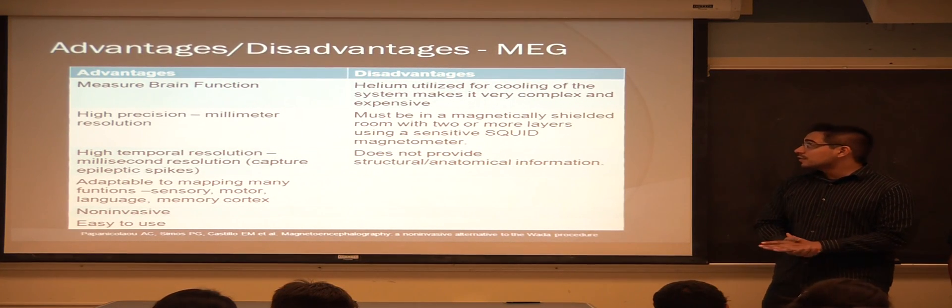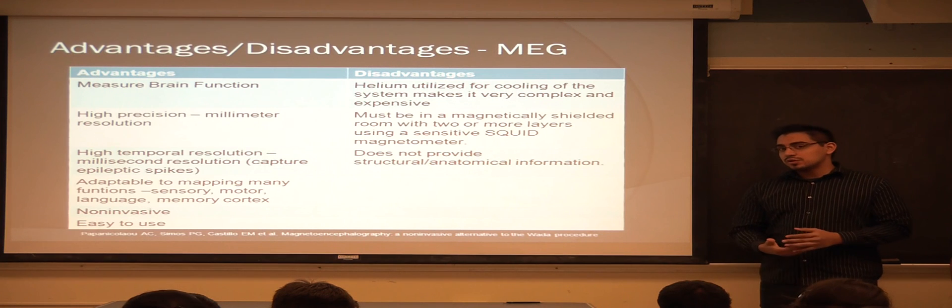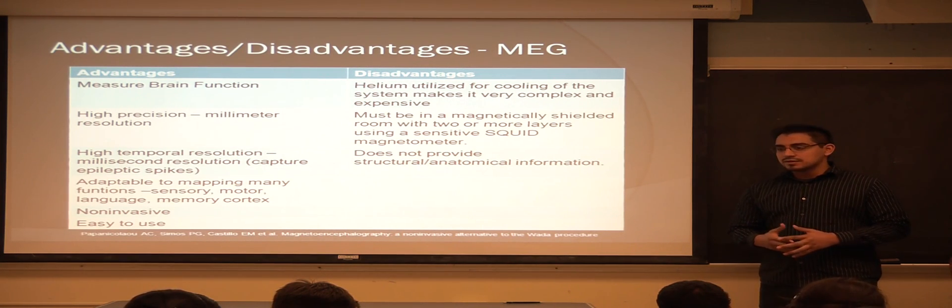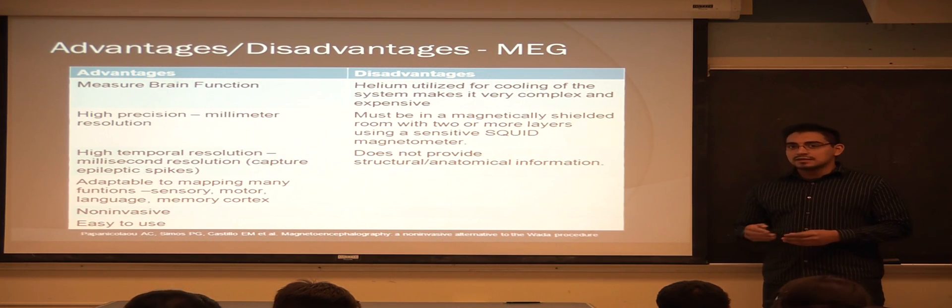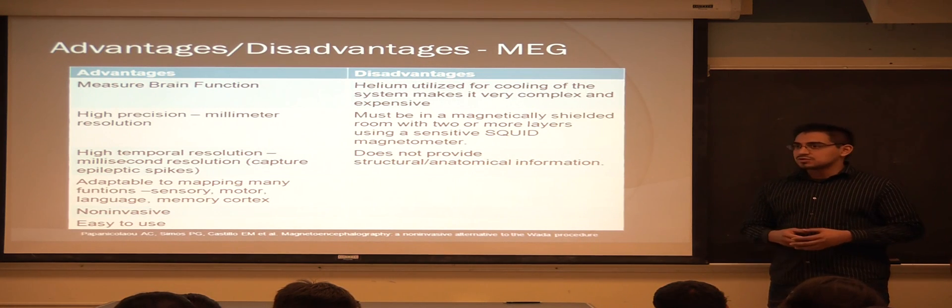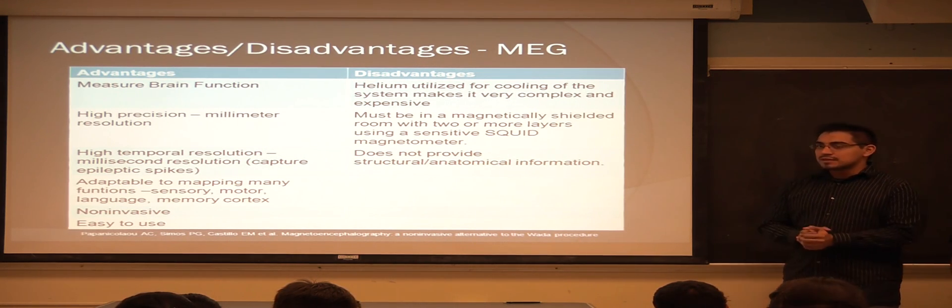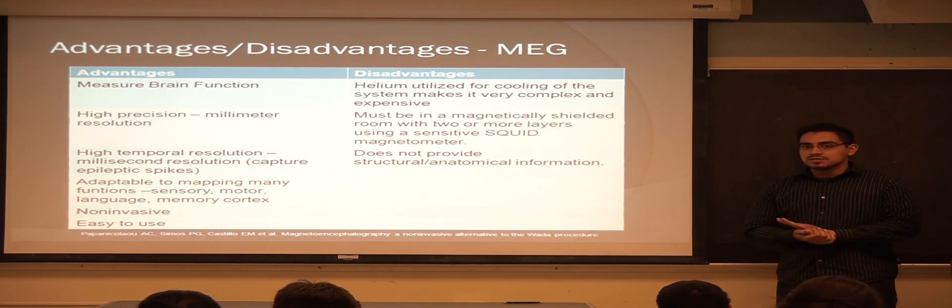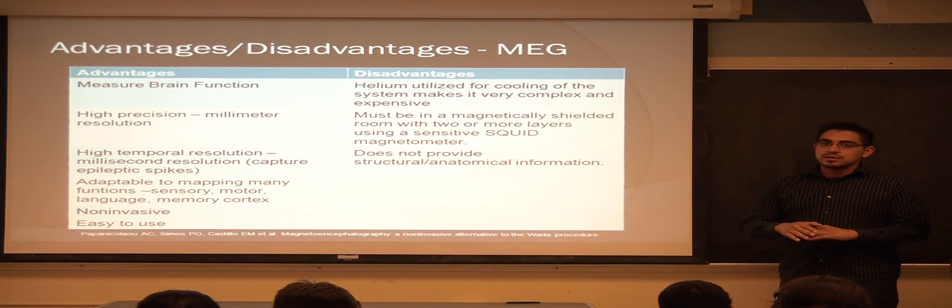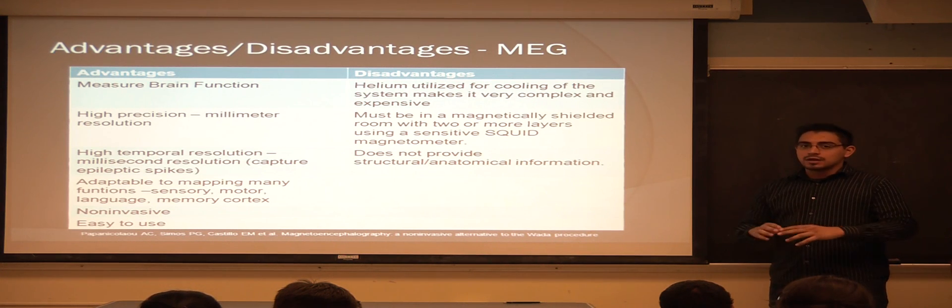But the major disadvantages of the MEG is that, due to the super cooling system that uses helium, it makes it really expensive and also makes the system itself pretty complex. Also, due to the magnetic shielding that you need, due to the small magnetic field that we have in the brain, that shielding also makes it more expensive and less convenient. It also doesn't provide structural or anatomical information that you need. On top of MEG, you need another imaging system to map out the anatomical portion we're looking at.